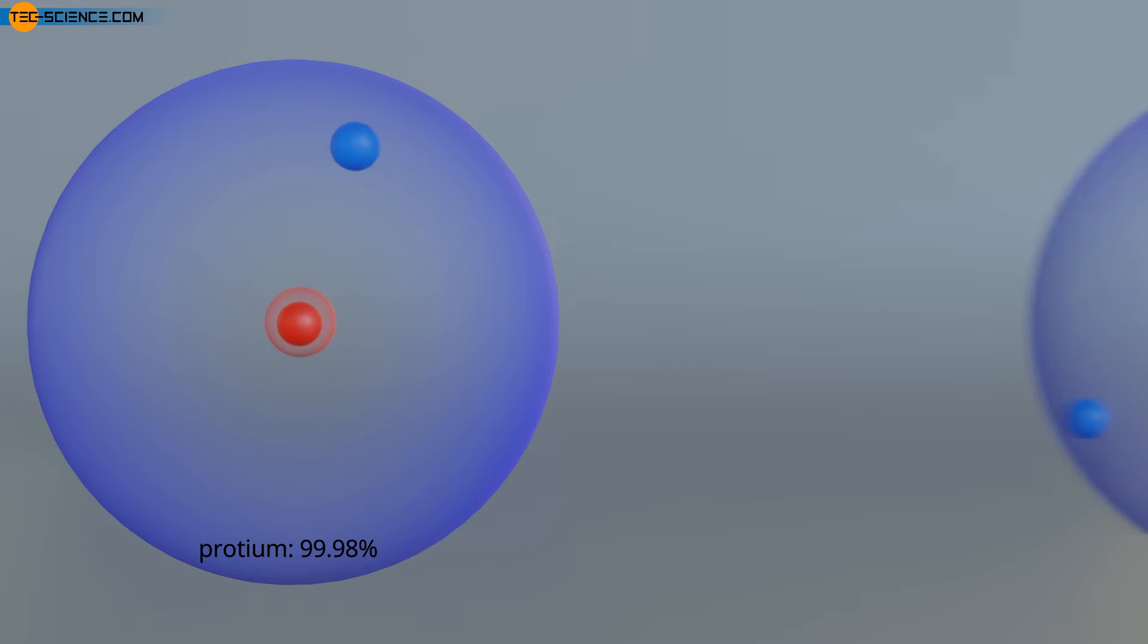If the hydrogen has a neutron in the nucleus besides the proton, this isotope is called deuterium. Deuterium accounts for only 0.015% of all hydrogen atoms found in nature.